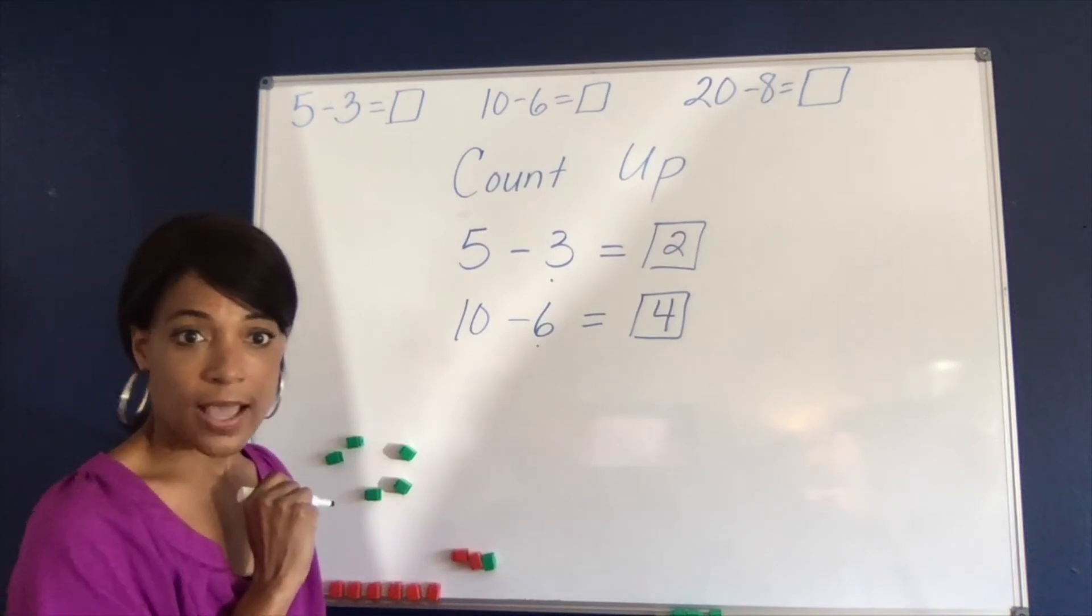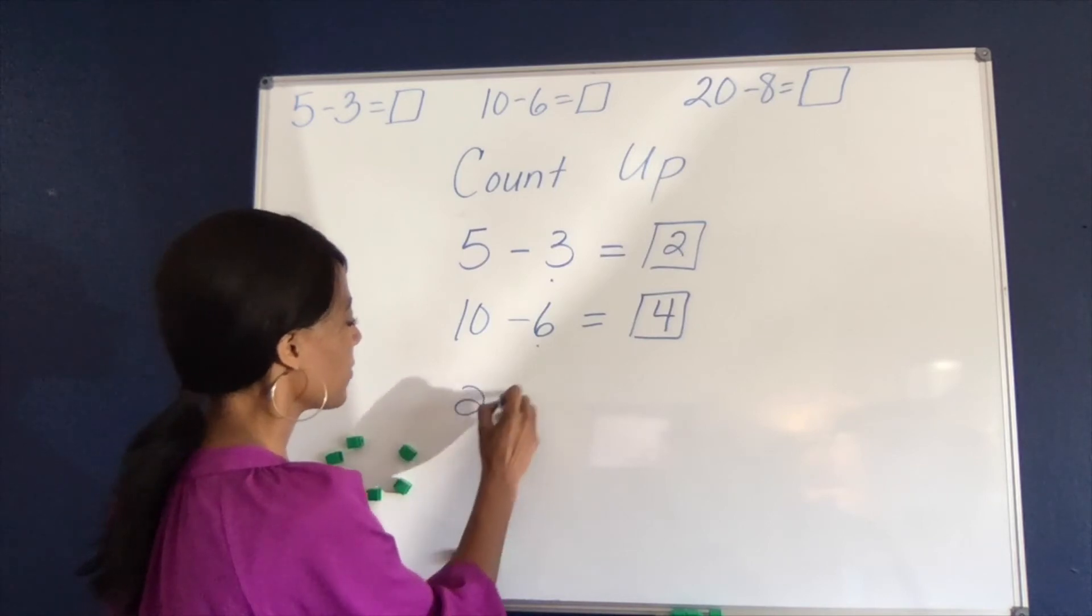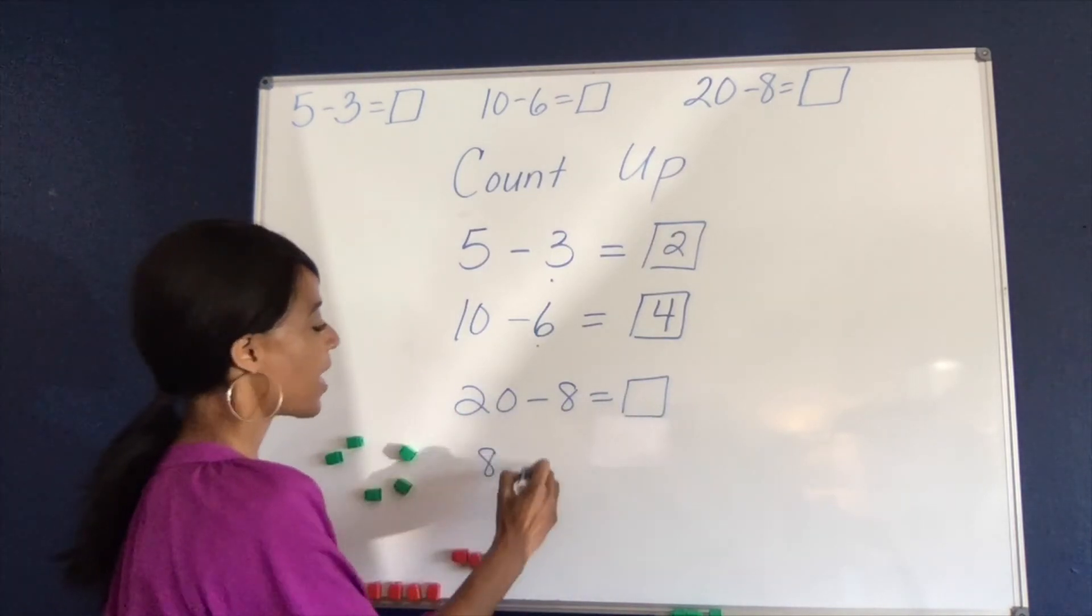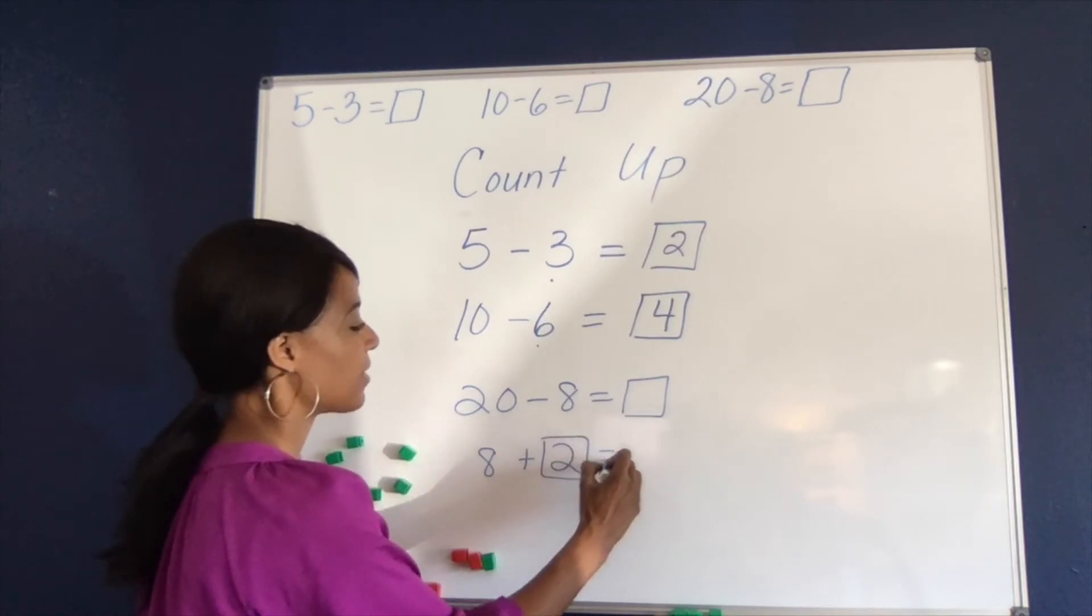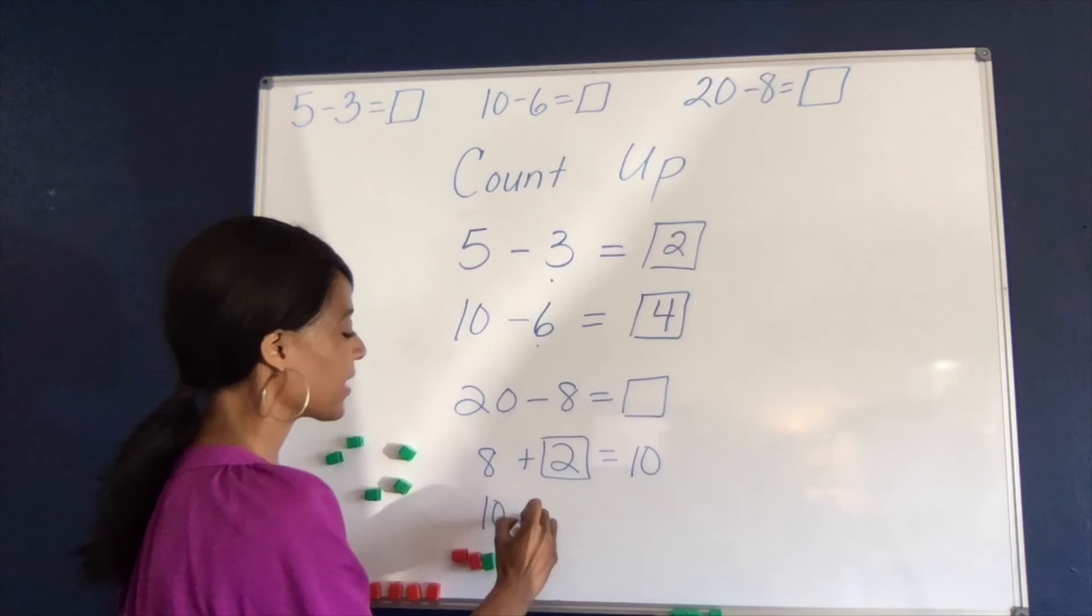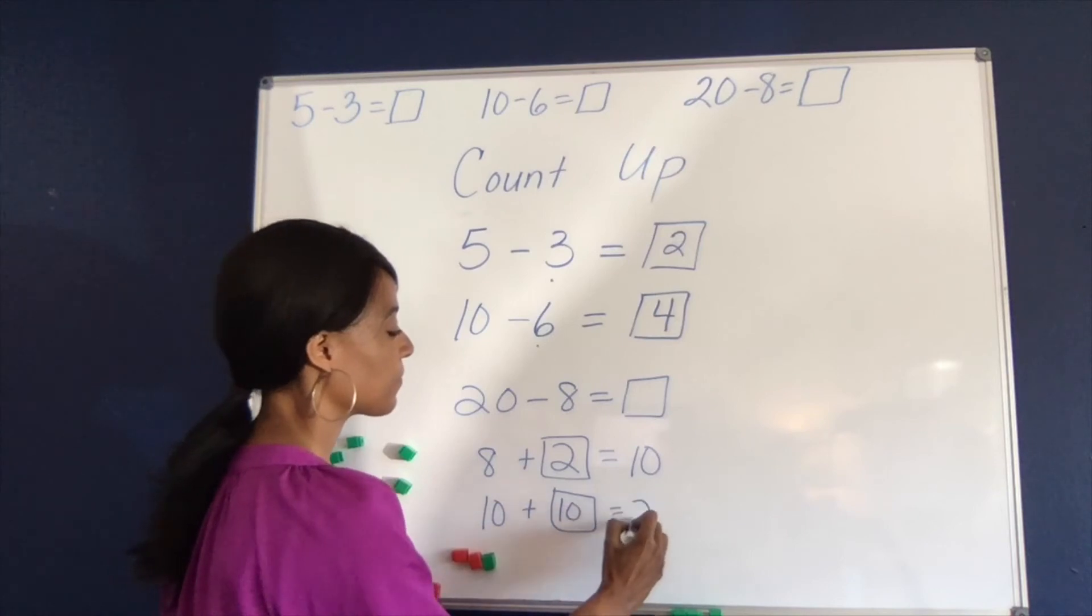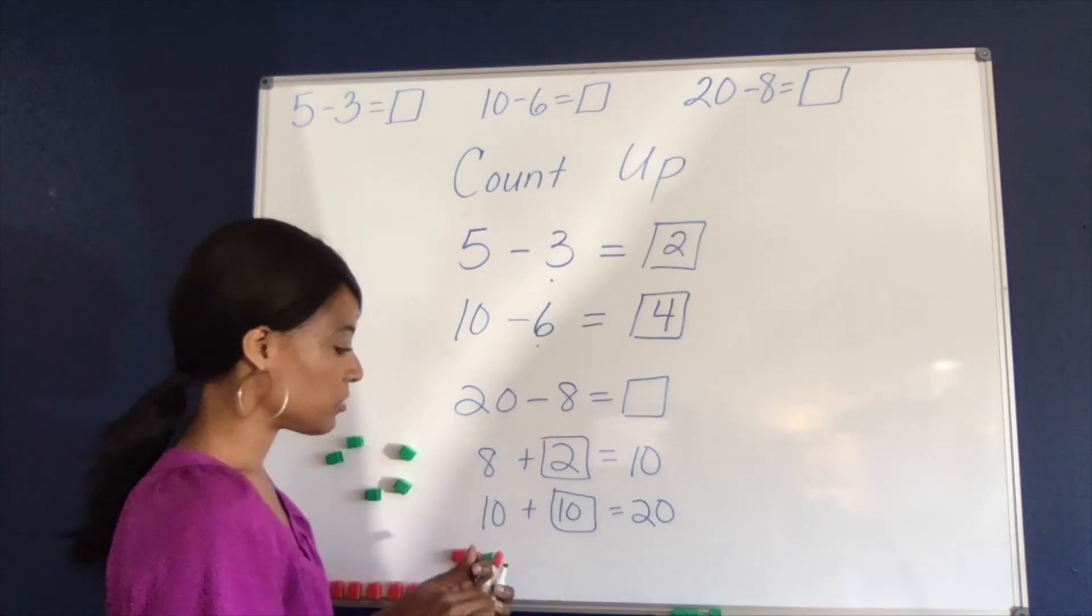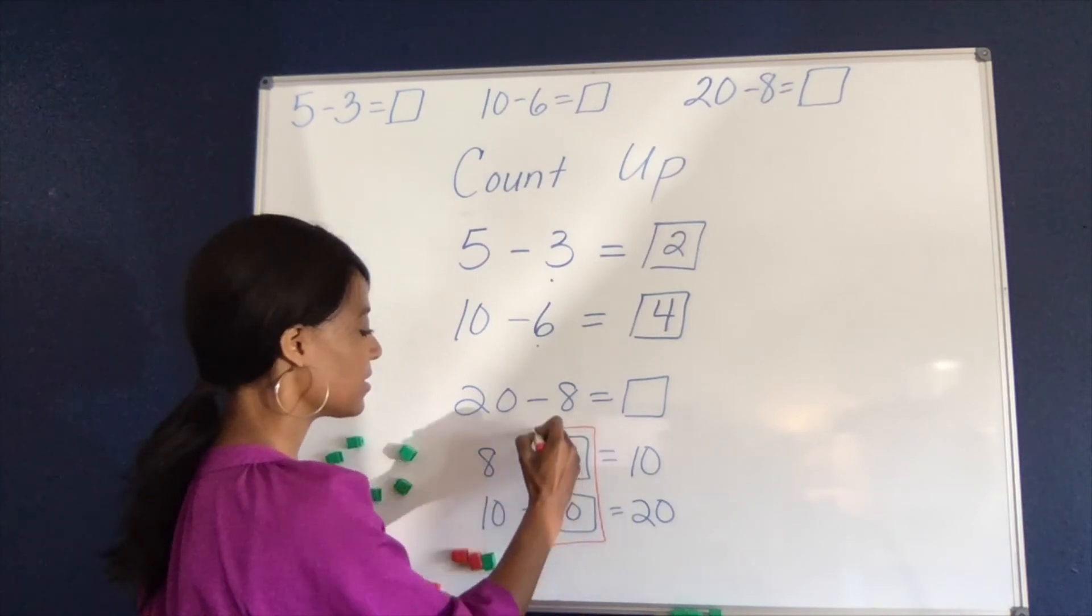So I don't know quite exactly what 20 minus 8 is, but I can think about if I have 8. If I have 8, I can count up 2 more to get to 10. And if I have 10, I can count up 10 more to get to 20. And so first I counted up 2, then I counted up 10. And when I put those two numbers together, that tells me the difference is 12.